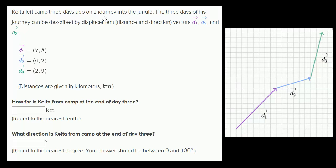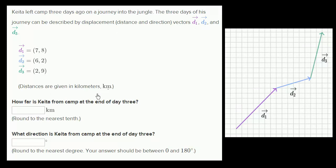Kida left camp three days ago on a journey into the jungle. The three days of his journey can be described by displacement vectors — distance and direction — denoted d1, d2, and d3. Displacement is distance with direction. The distances are given in kilometers. How far is Kida from camp at the end of day three?